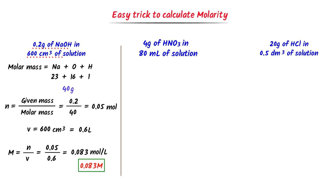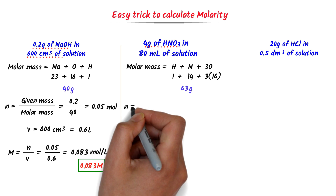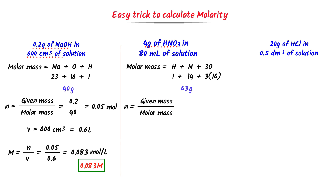Now in this problem, only the mass of solute HNO₃ is given. Firstly, I find the molar mass of HNO₃: H plus N plus 3 oxygen. Because there are three atoms of oxygen. The molar mass of hydrogen is 1 gram, nitrogen is 14 gram, and three atoms of oxygen at 16 gram each. After addition, I get 63 gram. So the molar mass of HNO₃ is 63 gram. To find the number of moles, I divide the given mass 4 gram by the molar mass 63 gram, and I get 0.06 mol.